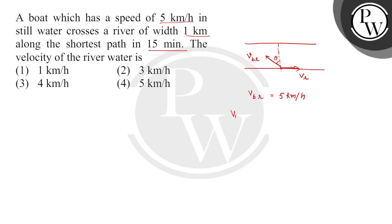So here, v_b,r cos theta will be equal to width upon time. Width is 1 km and time is 15 minutes which is 1 by 4 hours. So this is 4 km per hour.